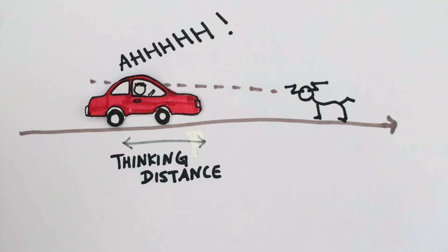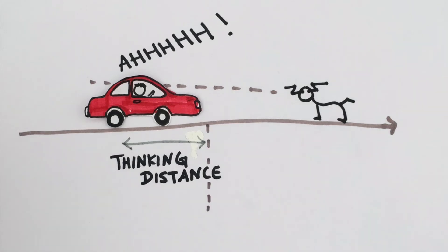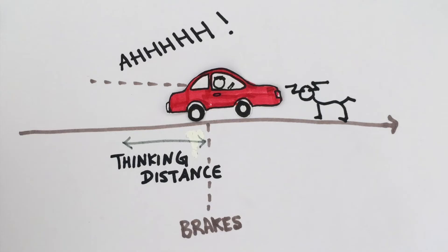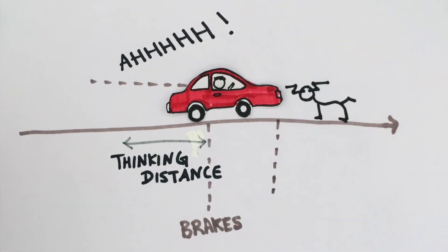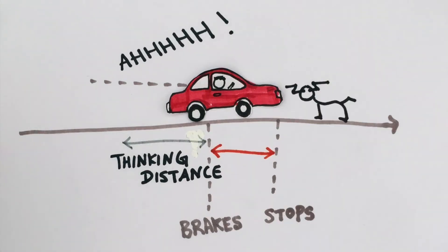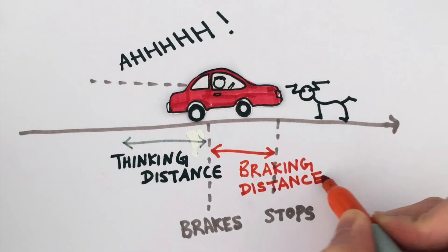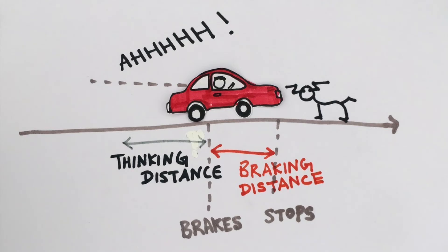Now the question is, what happens after the driver reacts and then steps on the brakes? The car's not going to stop immediately. It will gradually slow down because of friction between the tires and the ground before it finally stops. The distance the car travels once the brakes are applied is known as the braking distance.